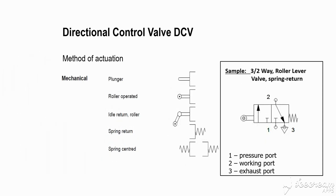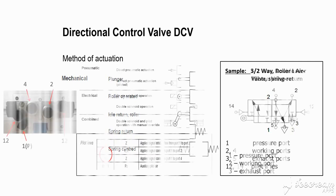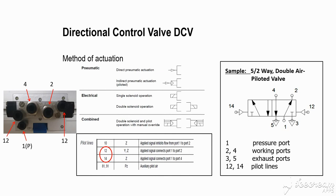Various methods of activation for 3x2 valves include: plunger type, roller operated, idle return roller valve, spring return type, and spring centered. For pneumatic activation, it is called pilot operated. Electrical activation uses solenoid operated valves, which are normally used in 5x2 valves.